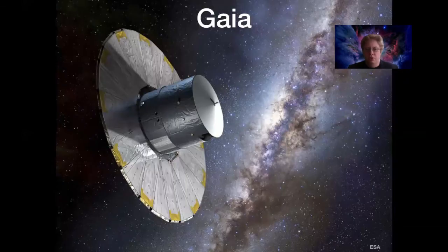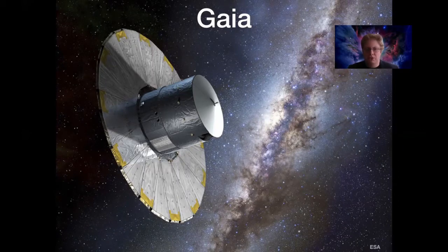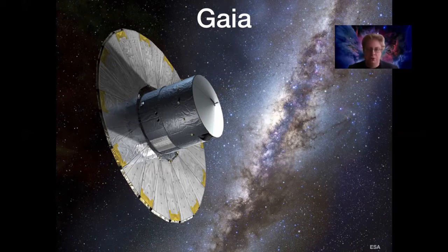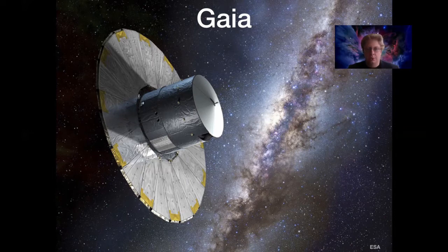We have recently launched a new telescope whose main purpose is to measure these parallaxes. This is the Gaia mission. It was a spacecraft launched by the European Space Agency. And Gaia's job is to basically measure the distance to billions of stars in our nearby solar neighborhood.